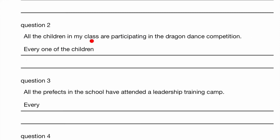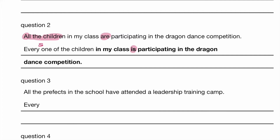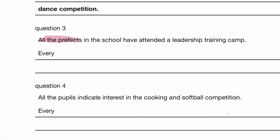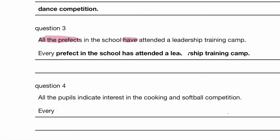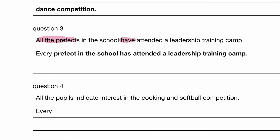All the children in my class are — 'all' is plural, therefore 'are' in the present tense. We have to stick to the present tense. Now we are using the singular verb because 'everyone' is singular. So: every one of the children in my class is participating in the dragon dance competition. We are using a plural subject — all the prefects — therefore plural verb 'have,' in present tense. So the answer is: every prefect in the school has attended a leadership camp.